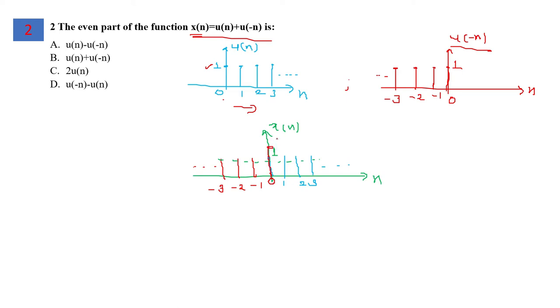To obtain x(n), we add these signals. At n=0, the value is 2, and the rest of the signal towards positive and negative directions has value 1. Taking the mirror image, it remains the same, so x(n) follows the property of an even component. The given signal itself is an even signal, so option B is correct.